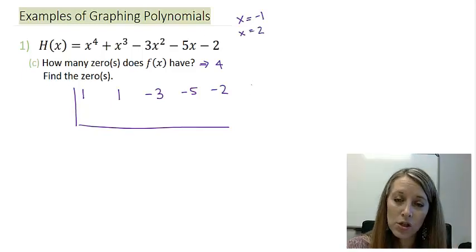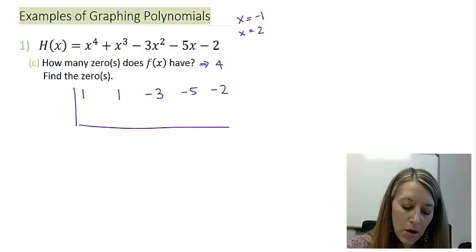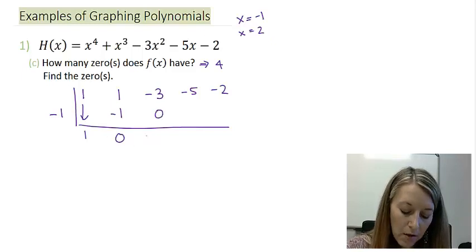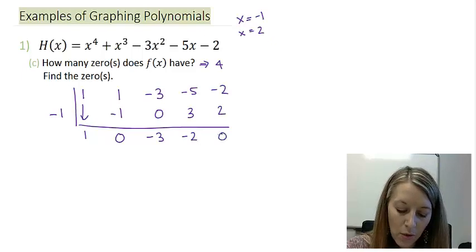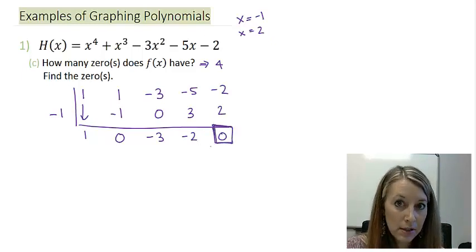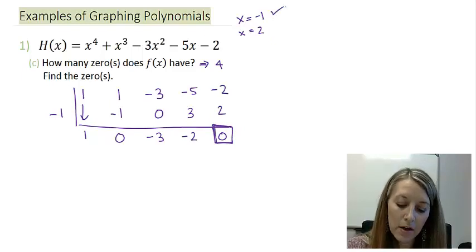You can pick either one to start with to divide it by. Let me go ahead and use my negative 1. Bring down my 1. Multiply gives me negative 1. Add gives me a zero. Multiply gives me a zero. Add gives me negative 3. Multiply gives me 3. Add gives me negative 2. Multiply gives me positive 2. And when I add, that gives me the remainder of zero that I was guaranteed to have because my calculator told me so.